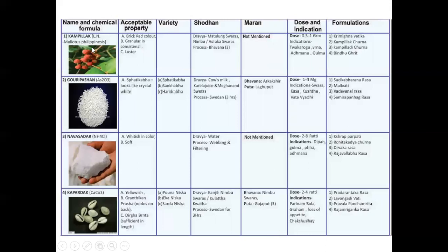Kampillak — Melatus Philippinensis — is brick red in color, granular in consistency, and has luster. There are no types. For Shodhana, Matulandaswarasa, Nimbu or Ardrakaswarasa is used and three Bhavanas are given. Marana is not mentioned as Kampillak is herbal in origin, though it is included in Saadharana Rasa. Dose is 0.5 to 1 gram. Indications: Klakkaroga — skin diseases, Vrana — infected wounds, Adhman — tympanitis or gas in the stomach, and Gulma — tumors.